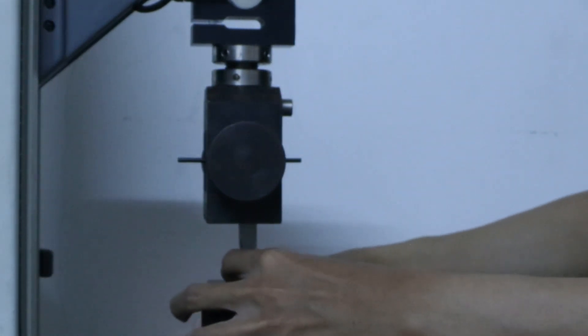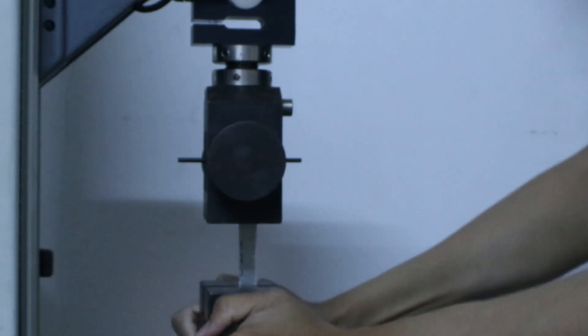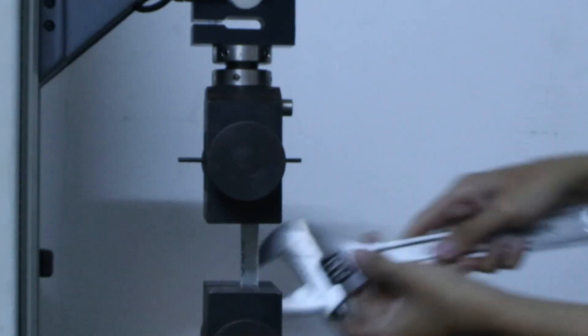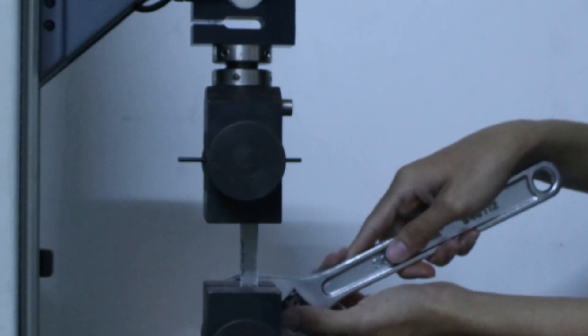After you reach the desired position, then you clamp the bottom gauge tightly. Try to use a wrench to make sure that it's tightly secured so that you won't get any slip on the specimen.